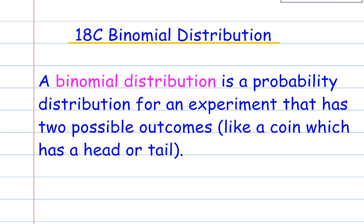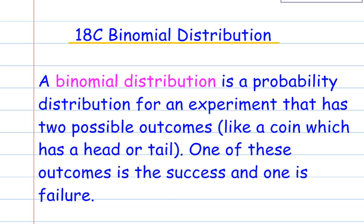A binomial distribution is a probability distribution for an experiment that has two possible outcomes, like a coin which has heads or tails. One of these outcomes is a success, and one of them is a failure.